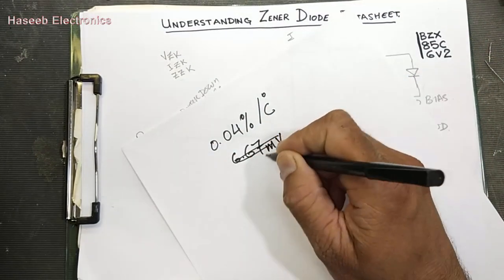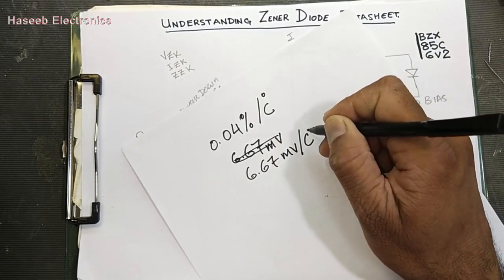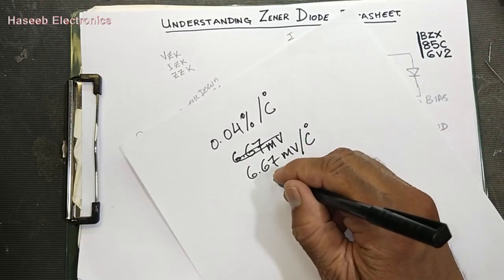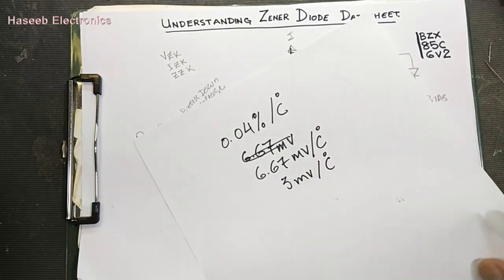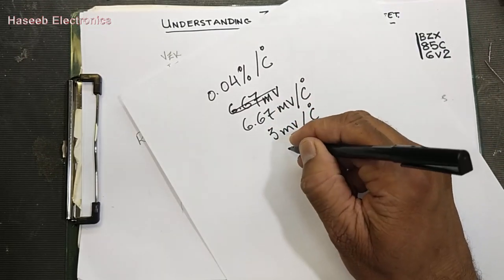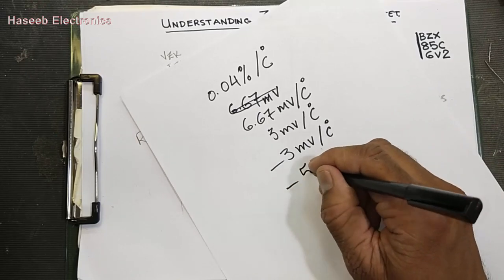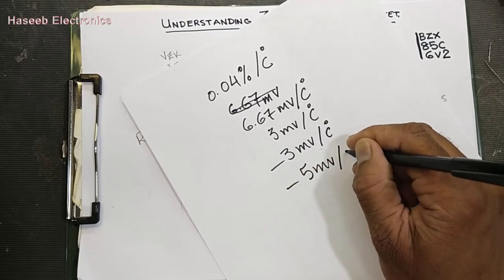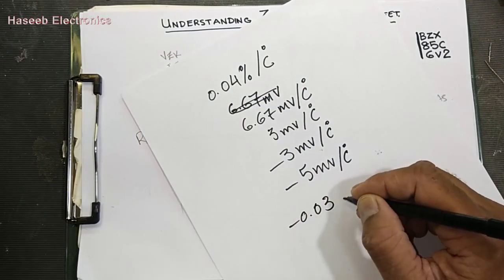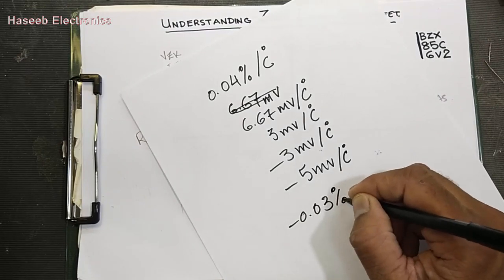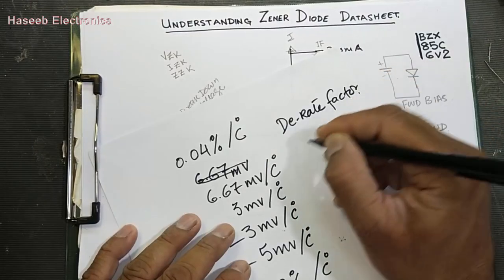Another datasheet shows VZ, impedance, test current, ZZK knee point impedance, knee point current, reverse voltage, and reverse current. Then it has TC — temperature coefficient — in percent per degree centigrade. For the 6V2 part, TC is 0.04% per degree centigrade. This can also be expressed as 6.7 millivolt per degree centigrade or 3 millivolt per degree centigrade. Some diodes have a negative TC of minus 3 mV/°C or minus 0.03% per degree centigrade.